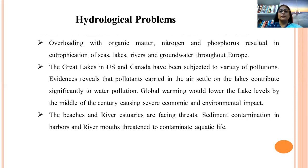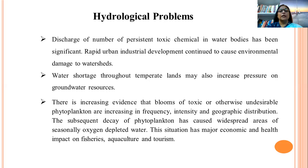Turning to hydrological problems: overloading with organic matter, nitrogen, and phosphorus has resulted in the putrefaction of seas, lakes, rivers, and groundwater throughout Europe. The Great Lakes in the US and Canada have been subjected to a variety of pollution. Global warming would lower lake levels by the middle of the century, with social and economic impacts. Discharge of persistent toxic chemicals into water bodies has been significant due to rapid industrial development. There is increasing evidence that blooms of toxic and otherwise undesirable phytoplankton are increasing in frequency, intensity, and geographic distribution.